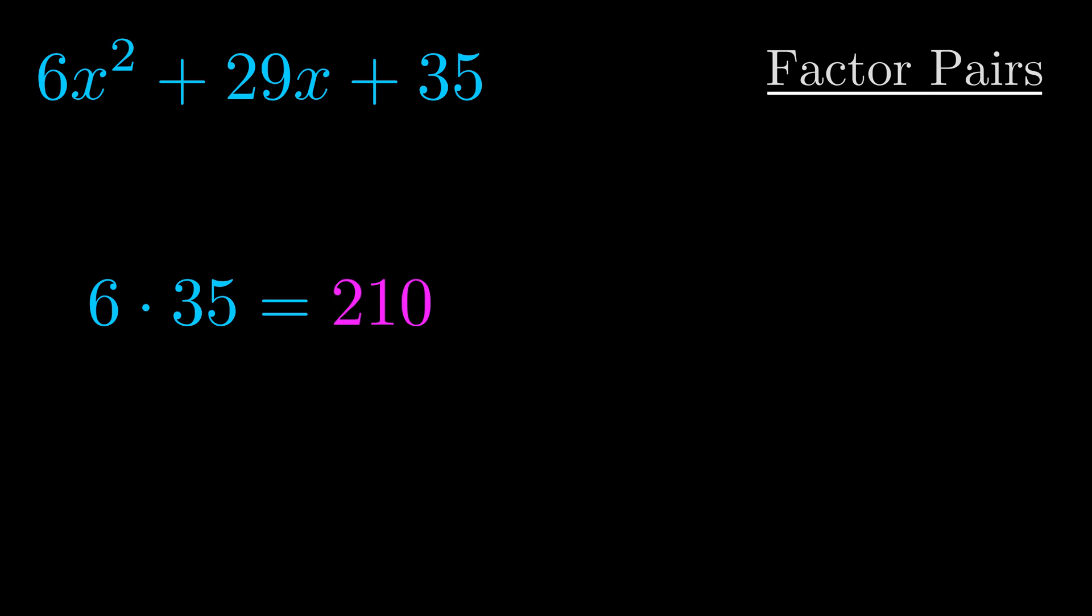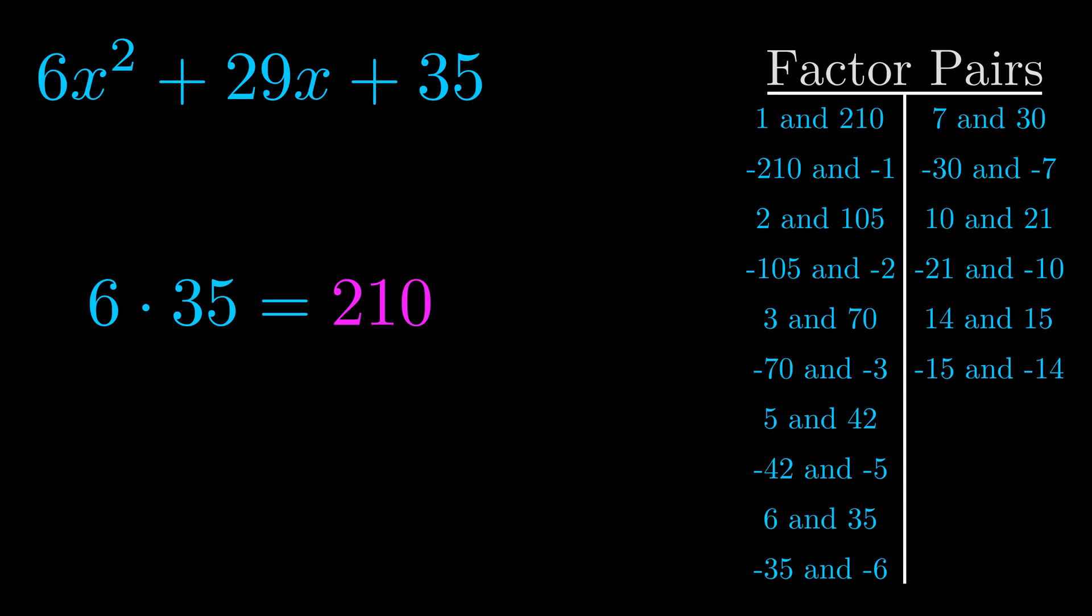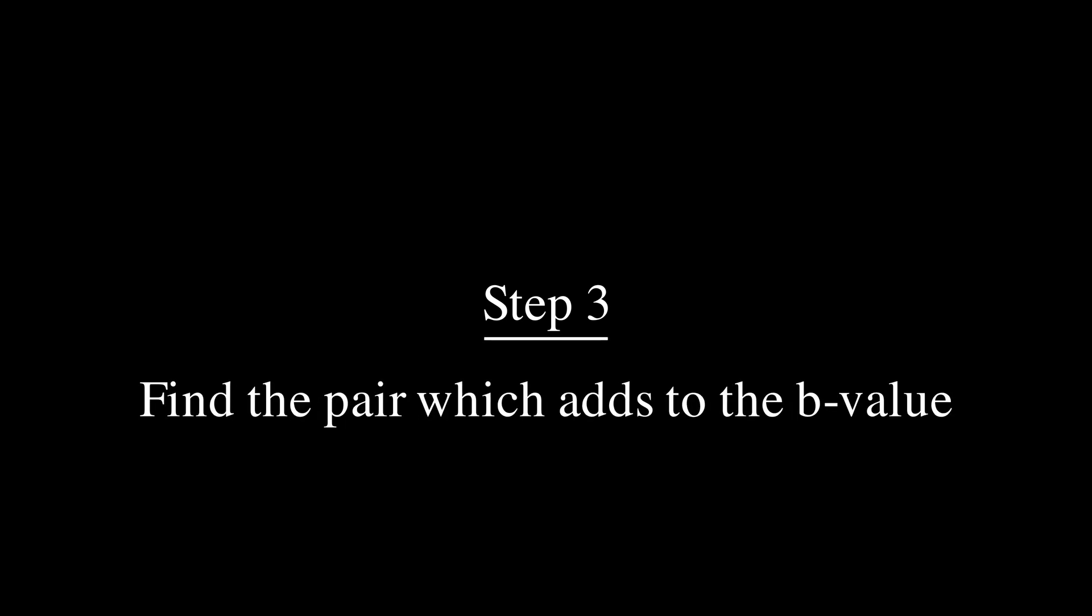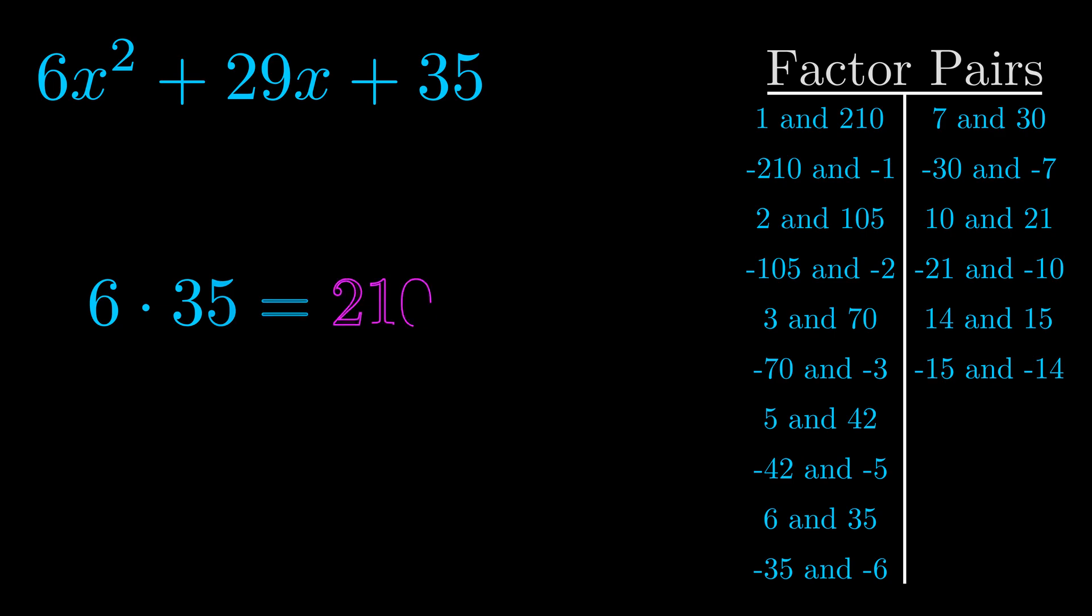Okay here's what I came up with. Now once you have these factor pairs the goal is to find which of these pairs adds to the b value. The b value is the coefficient on the x term. That's the middle term, the one that we haven't done anything with yet. And really this is the only factor pair that we need.